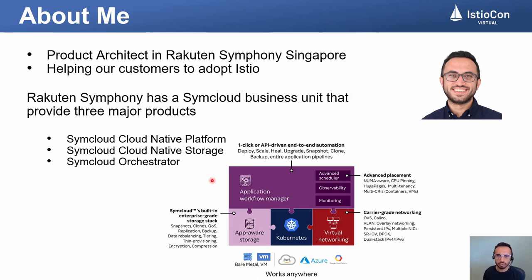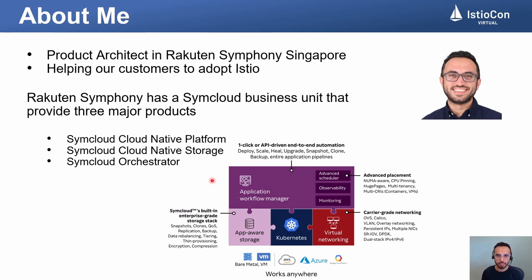I work as a product architect in Rakuten Symphony, Singapore. I help our customers in their Istio adoption journey, and that includes multi-cluster Istio as well. One of the business units of Rakuten Symphony is the SimCloud business unit, and we have three major products: a cloud native platform which is a carrier-grade Kubernetes distribution, cloud native storage which is an enterprise-grade application-aware Kubernetes native storage, and an orchestrator which is a multi-domain, multi-site service delivery orchestrator that can deliver complex tasks including provisioning and bootstrapping Kubernetes across multiple sites and data centers.